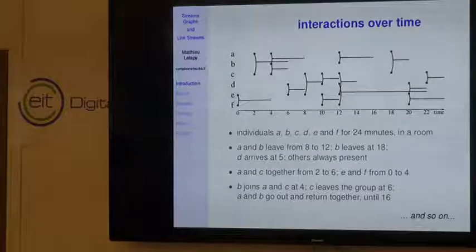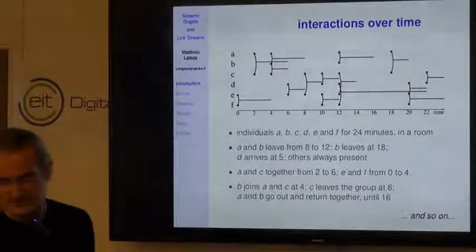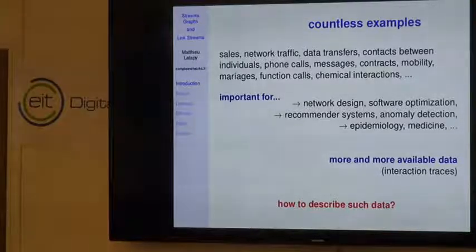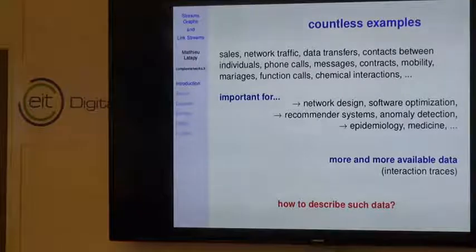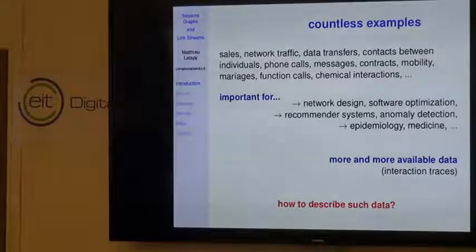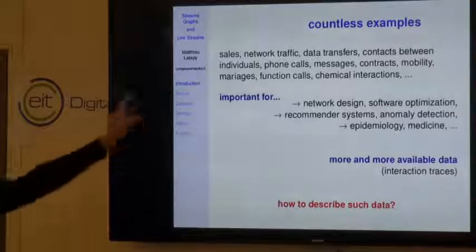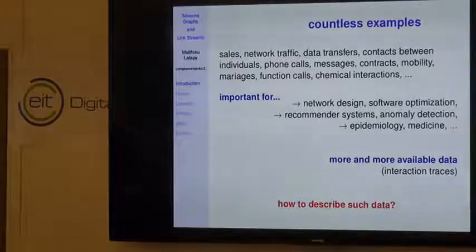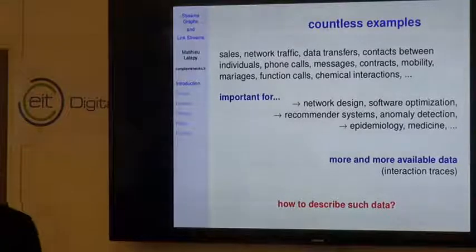This is the kind of object I'm interested in. Why am I interested in this kind of data? Actually because it's quite pervasive. If you think about it, many of the data you are considering are not really graphs but sequences of interactions. Examples include users listening to music, sales, network traffic, data transfers, contacts between individuals, phone calls, messages, contracts, mobility, marriages, function calls in programs, and chemical interactions like protein interactions.